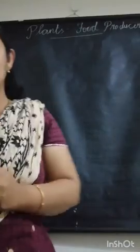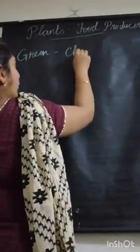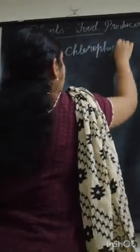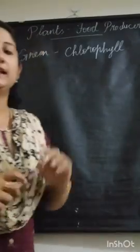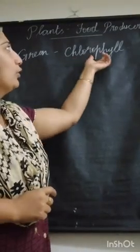Does every living organism prepare food by themselves? No. Only plants are able to prepare food by themselves. Plants can do this because of the presence of a green colour pigment called chlorophyll. So plants prepare their own food because of the green colour pigment called chlorophyll.